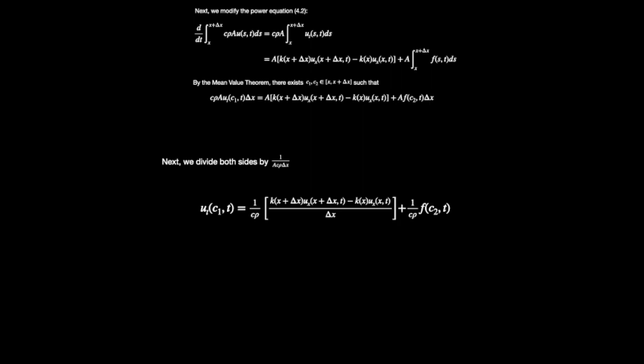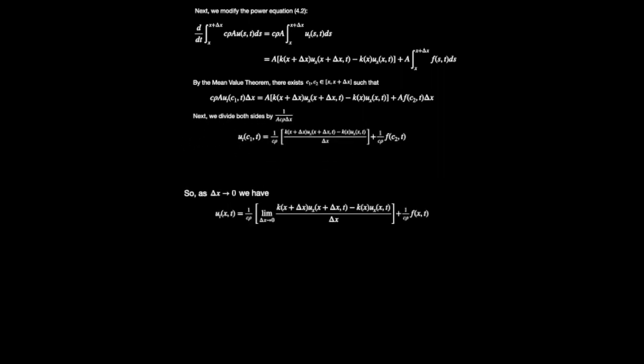We're going to apply the mean value theorem. We'll divide both sides by this constant. Notice that now the flux terms have turned into a difference quotient. As we take the limit as delta x goes to zero, we have three things happen.